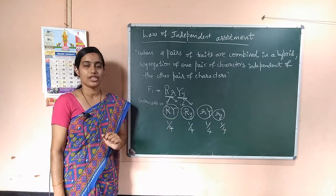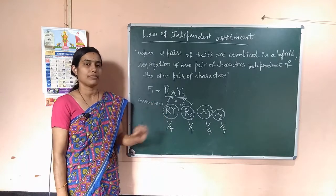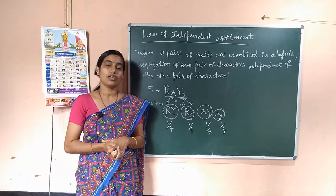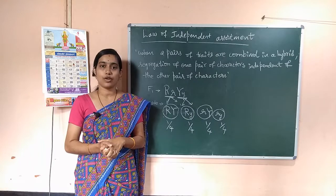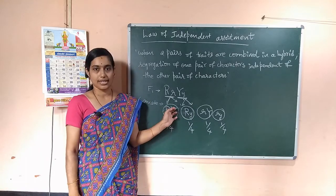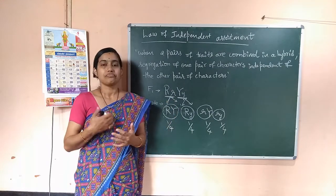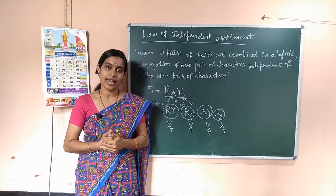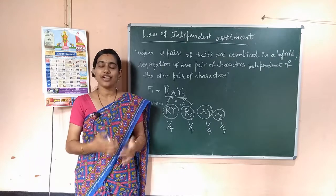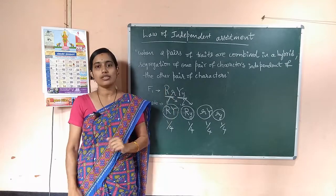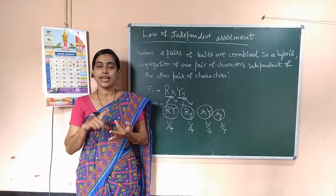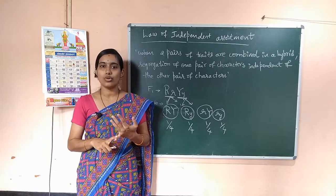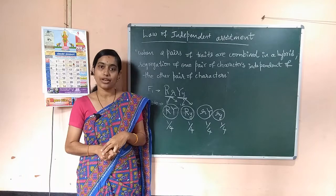This law is based on Mendel's observations from dihybrid crosses. We call Mendel the father of genetics because he was the first to study inheritance. He carried out experiments selecting seven pairs of contrasting characters for seven years and proposed three laws: law of dominance, law of segregation, and law of independent assortment — along with two types of genetic crosses: monohybrid cross and dihybrid cross.